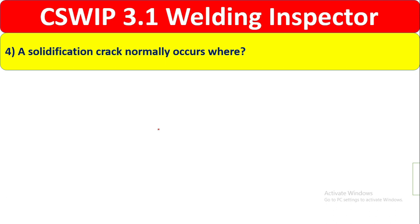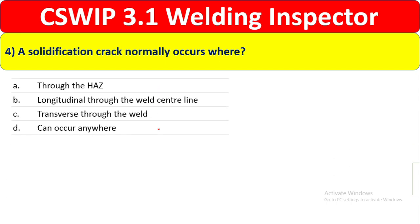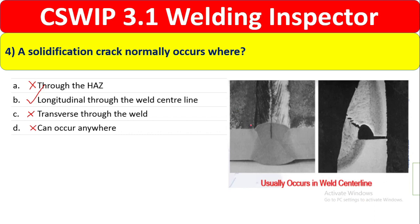Question 4: A solidification crack normally occurs where? Options: through the HAZ; longitudinally through the weld centerline; transversely through the weld; can occur anywhere. As shown in the diagram, solidification cracking usually occurs along the weld centerline, running longitudinally. Therefore, Option B — longitudinally through the weld centerline — is the correct answer.